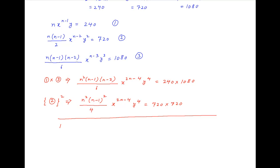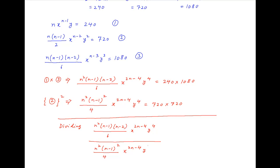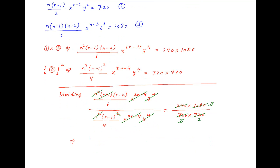Dividing these two equations, we get n²(n-1)(n-2)/6 times x^(2n-4) times y^4, divided by n²(n-1)²/4 times x^(2n-4) times y^4, equal to (240 times 1080) divided by (720 times 720). The x^(2n-4) times y^4 cancels across numerator and denominator, as does n²(n-1), and the right-hand side simplifies to equal one half.